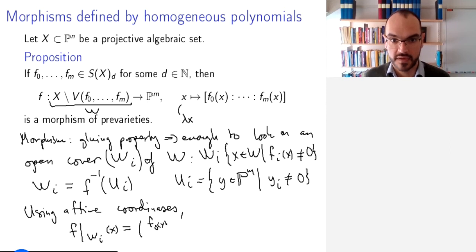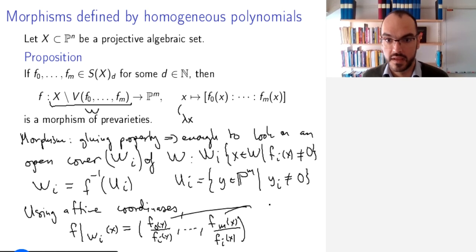f₀(x)/fᵢ(x) up until fₘ(x)/fᵢ(x). And so these go through all indices that are different from i. So now I get a map from the affine variety Wᵢ to the affine variety Uᵢ that in the coordinates of these affine varieties is given in this way. Each coordinate here is a regular function on this affine variety.